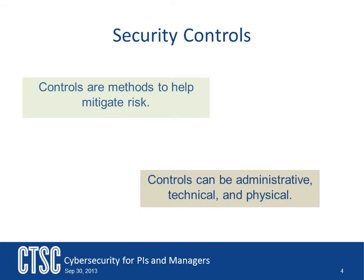Risk Limitation: to limit the risk by implementing controls that minimize the adverse impact of a threat's exercising a vulnerability — that is, use of supporting, preventive, and detective controls. Risk Transference: to transfer the risk by using other options to compensate for the loss, such as purchasing insurance.